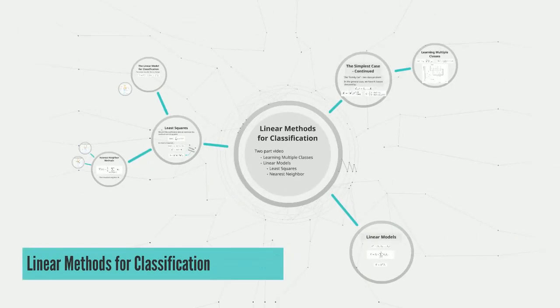In summary, a large subset of the most popular techniques today are variants of these two simple procedures: least squares and nearest neighbor. In fact, 1-nearest-neighbor captures a large percentage of the market for low-dimensional problems. There are several methods to enhance these approaches, such as kernel methods, high-dimensional spaces, local regression, basis expansion, and projection pursuit. That concludes this video on linear methods for classification. Video 3 will talk about linear methods for regression — what happens when we're searching for a numerical output instead of separating data into classes. Thanks for listening.